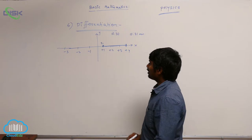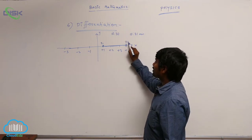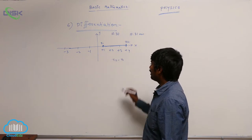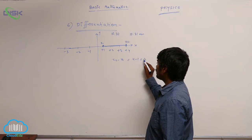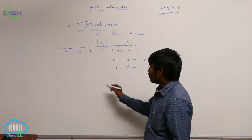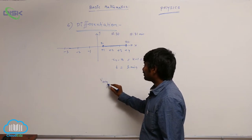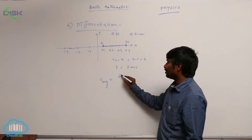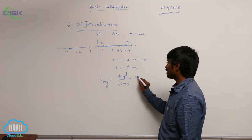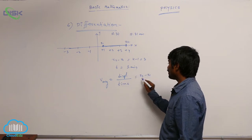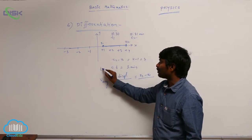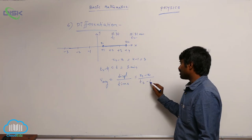If we take the initial position as x1 and the final position as x2, the displacement is x2 minus x1, which equals 4 minus 1 = 3. Time t equals t2 minus t1, which is 1 minute. Average velocity equals displacement divided by time duration, that is x2 minus x1 over t2 minus t1.